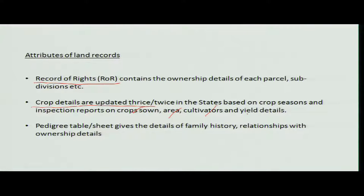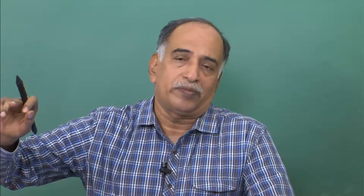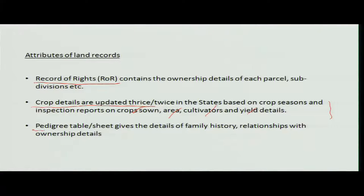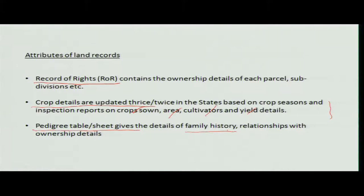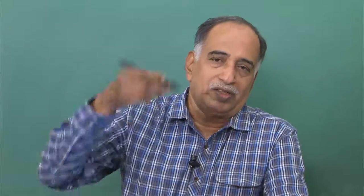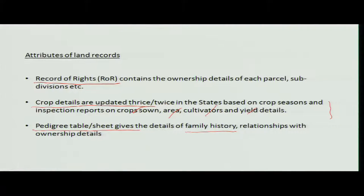This is where agriculture processes and food security aspects come into picture. For example, if a village grows 10 acres of maize, you can calculate how many tons of maize will be available for national contribution. The pedigree table or sheet gives information about the family history — how land has been transferred across generations from grandfather to father to the current owner — and this is also added as attribute data.